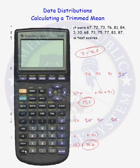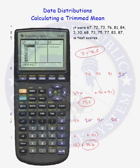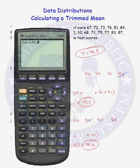Now let's see how to calculate the mean, the 5% trimmed mean, and the 10% trimmed mean on the calculator. First, enter your data into a list — I have already done that and put the data into List 1. I'm going to sort that data: Stat, number 2, sort ascending. I want to sort List 1.